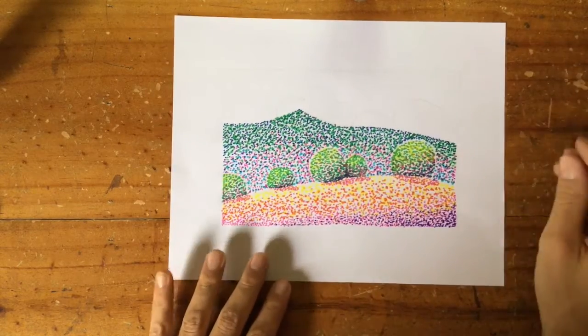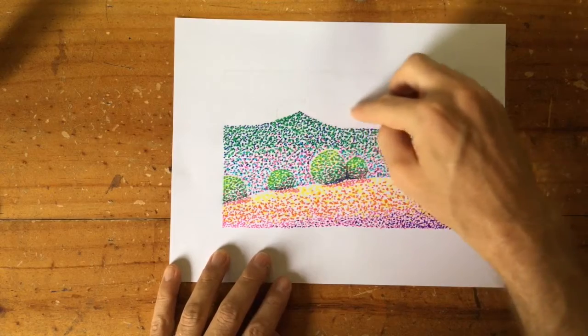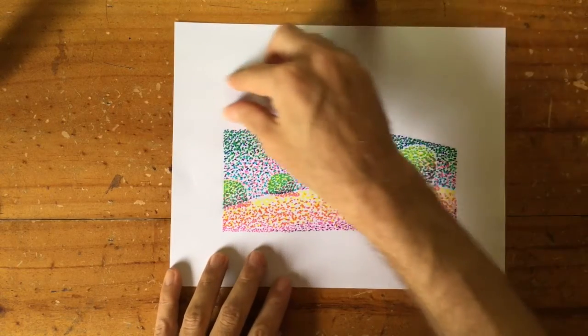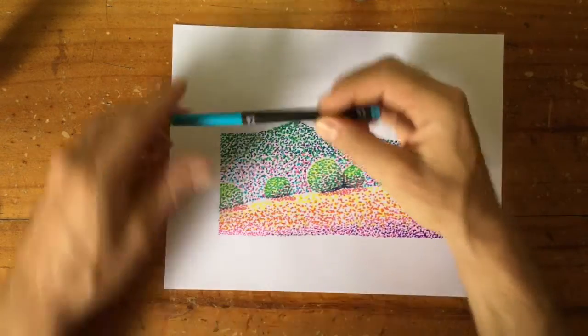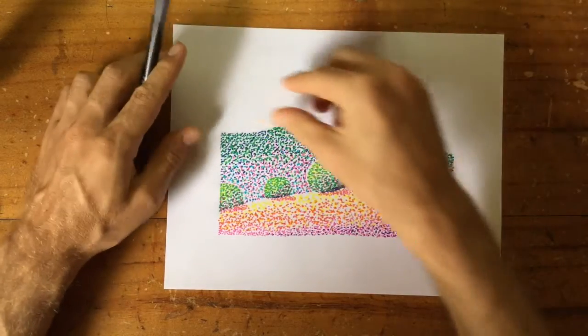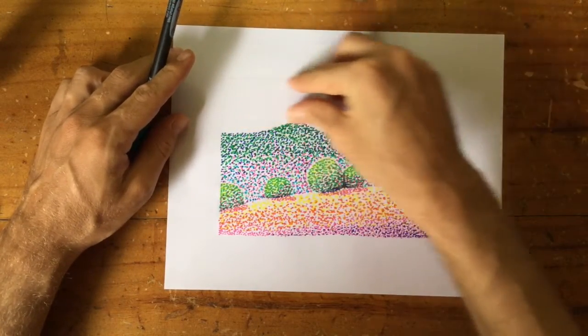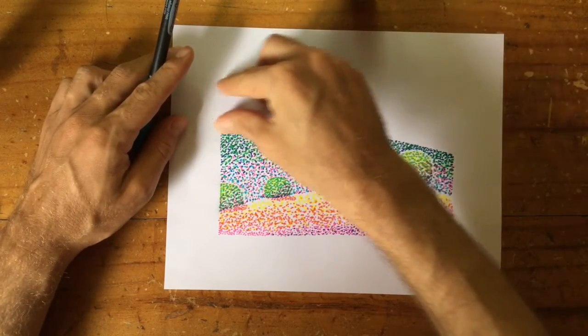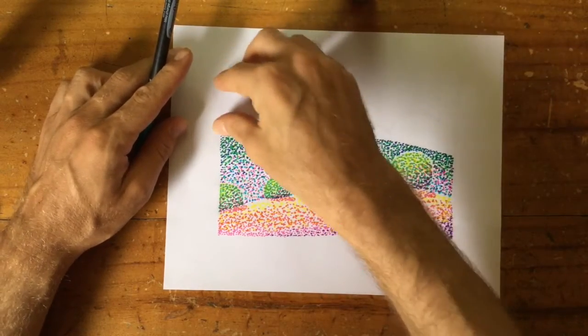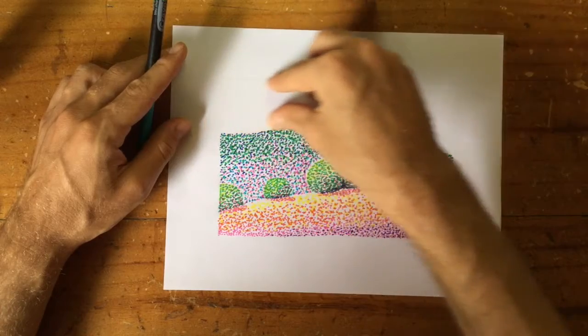Okay, so the next will be the sky. We'll leave the clouds and do them last of all. So I have the light blue again. And we're going to do quite an even coverage of the sky. So not too compact, not too spaced out, but just quite even all the way across.